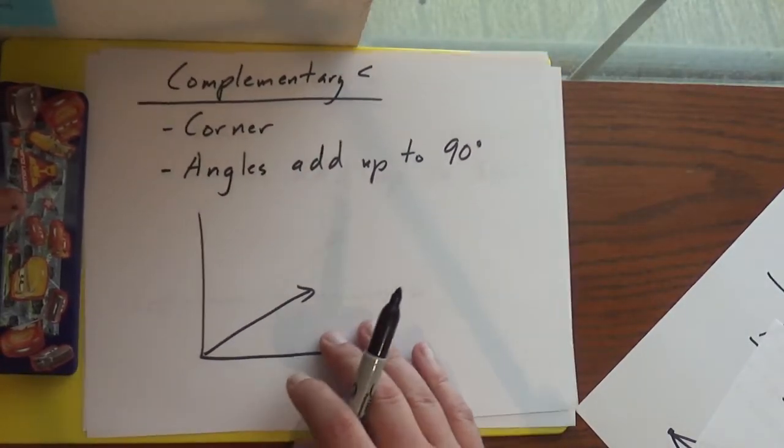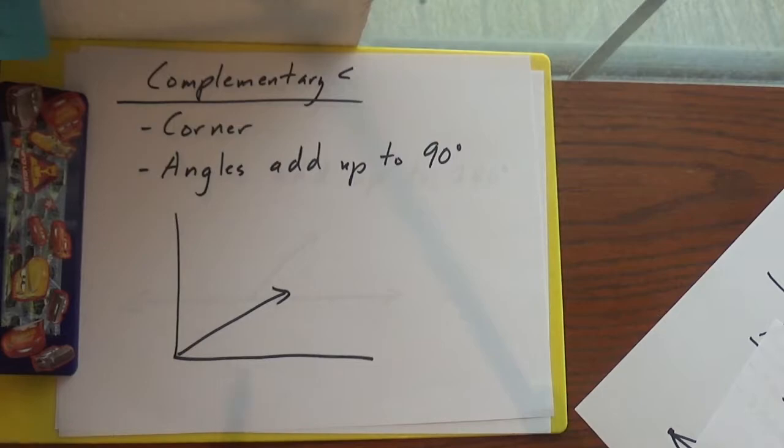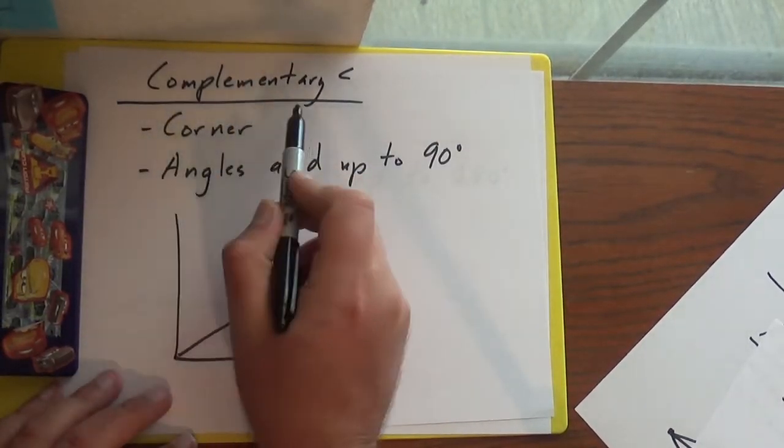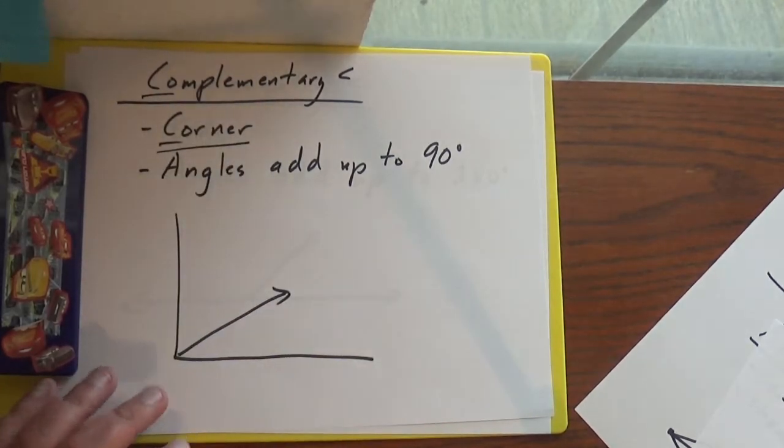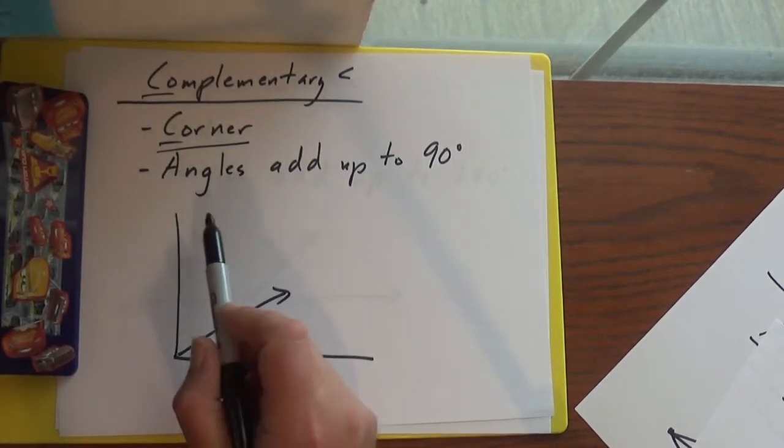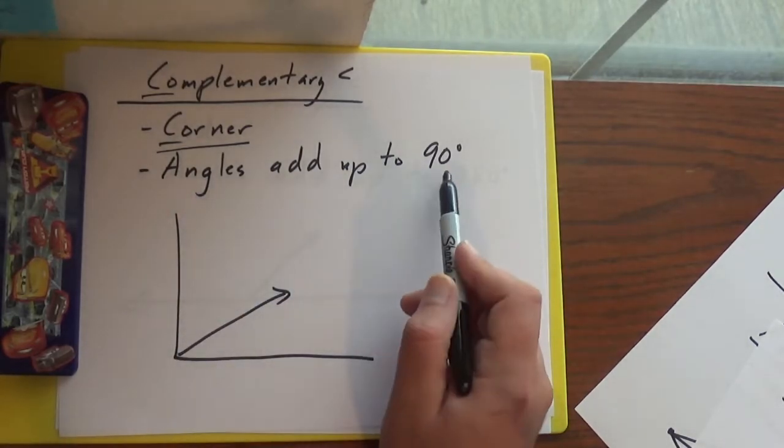Complementary angles. We're going to have complementary and supplementary. So with complementary, just think corner. C, C. Complementary, corner. Complementary, corner. And basically it just means the angles add up to 90 degrees.